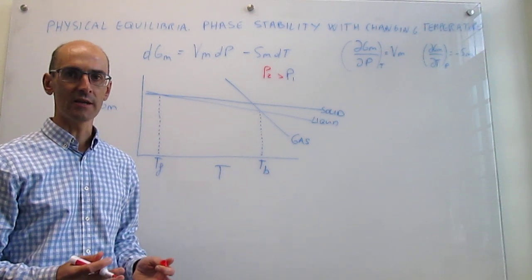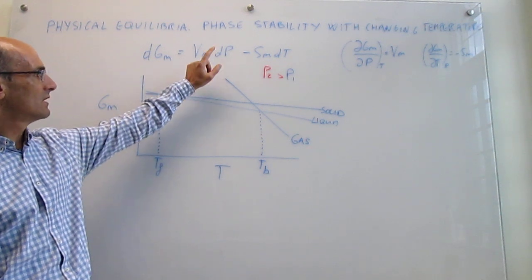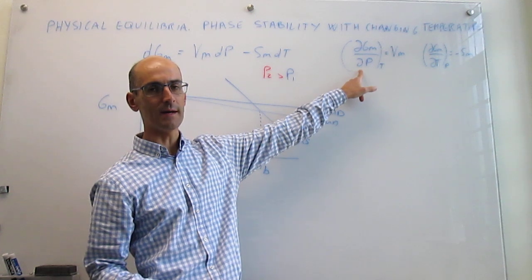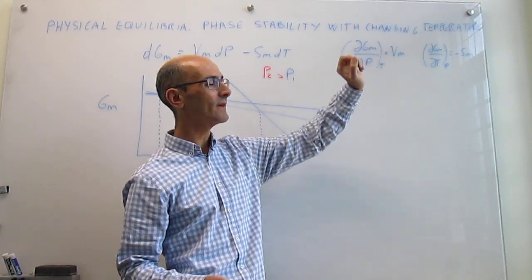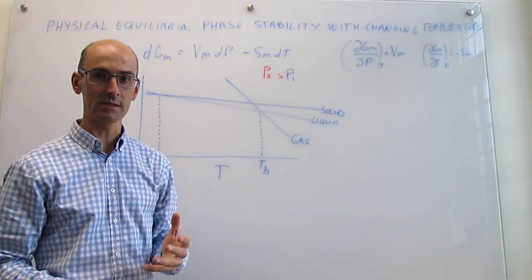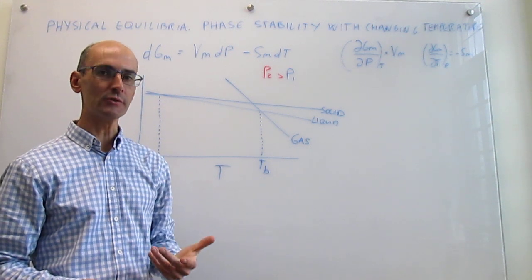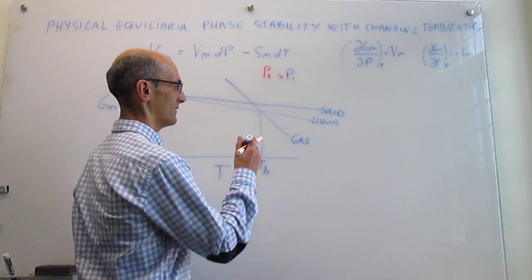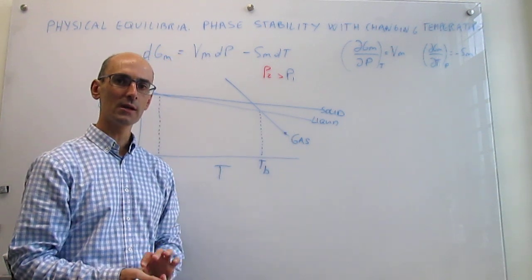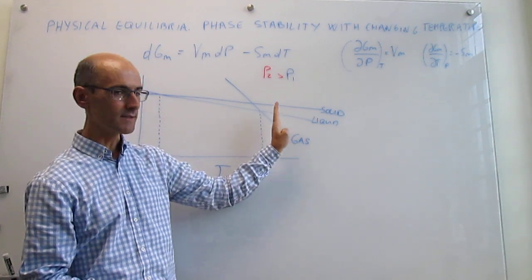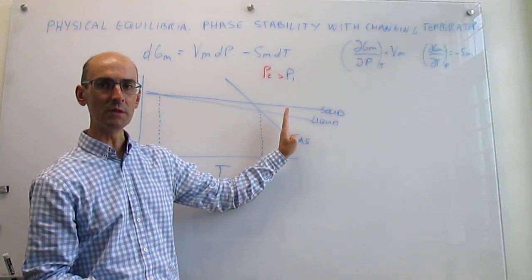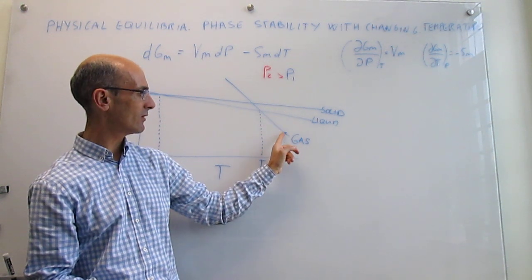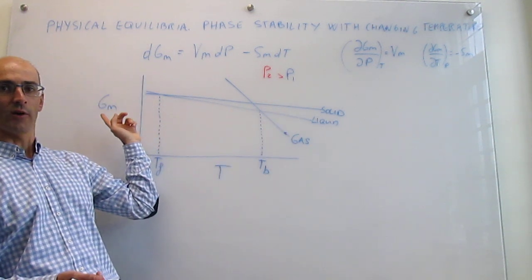These lines are going to change, because the molar Gibbs energy depends on pressure — and it depends on pressure as the molar volume. Notice that if I increase the pressure, making this differential of P positive, then because the molar volume is positive, the molar Gibbs energy is going to increase. It will increase by a factor that is proportional to the molar volume of that phase. So if I take one point on the line of the gas and hold constant the temperature, moving vertically in this axis, the molar Gibbs energy for that point at higher pressure is going to be higher — larger molar Gibbs energy than what I have here.